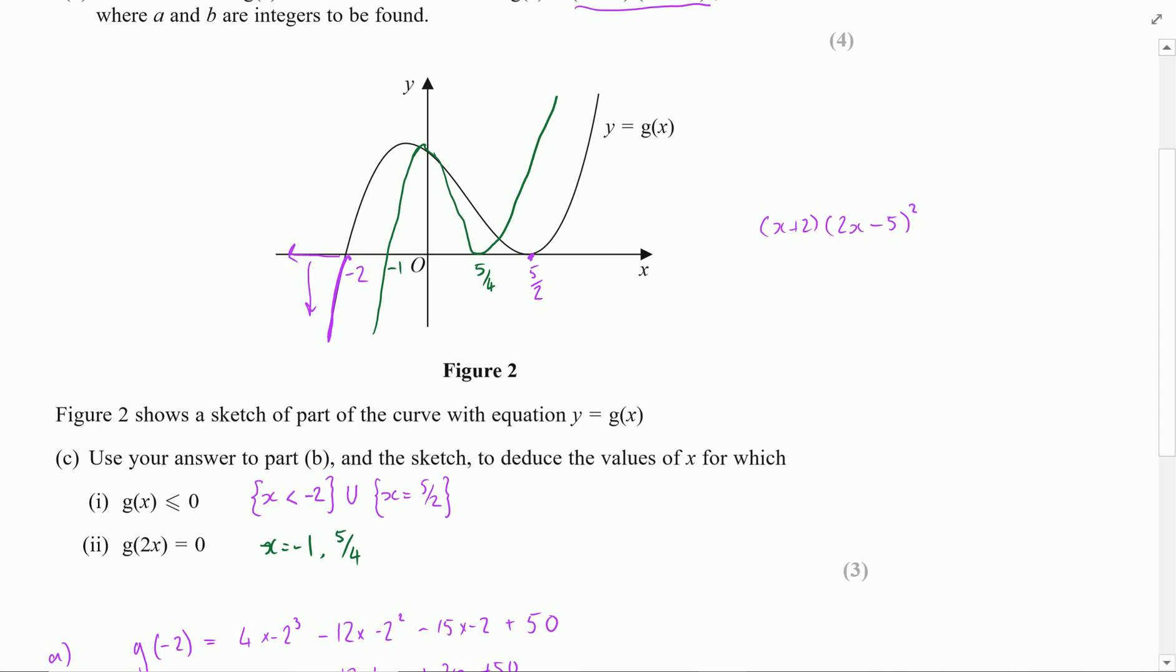The other way I can think about that if you choose to is that now x takes the value 2x. So I could go back into here and think well this is now going to be 2x plus 2 because I'm just replacing the x with 2x. And in this one that's 2 lots of 2x minus 5 squared. Where are the roots of this?